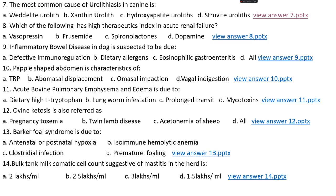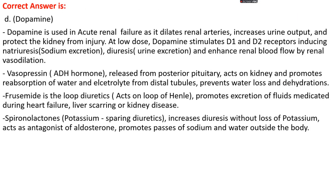Question number 8. Which of the following has a high therapeutic index in acute renal failure? Options A, vasopressin; options B, furosemide; options C, spironolactone; options D, dopamine. The right answer is option D, dopamine. Dopamine is used in acute renal failure as it dilates renal arteries, increases urine output, and protects the kidney from injury. At a low dose, dopamine stimulates dopamine-1 and dopamine-2 receptors, inducing natriuresis and diuresis, and enhances renal blood flow by renal vasodilation.